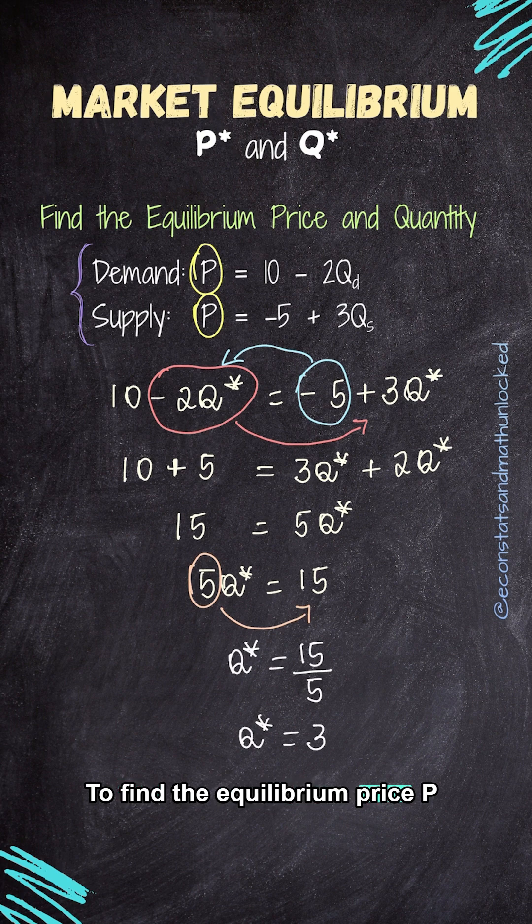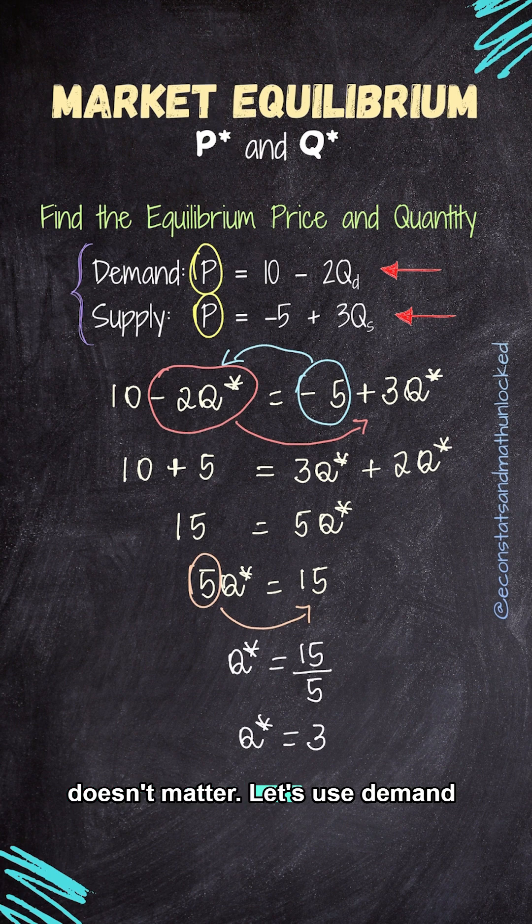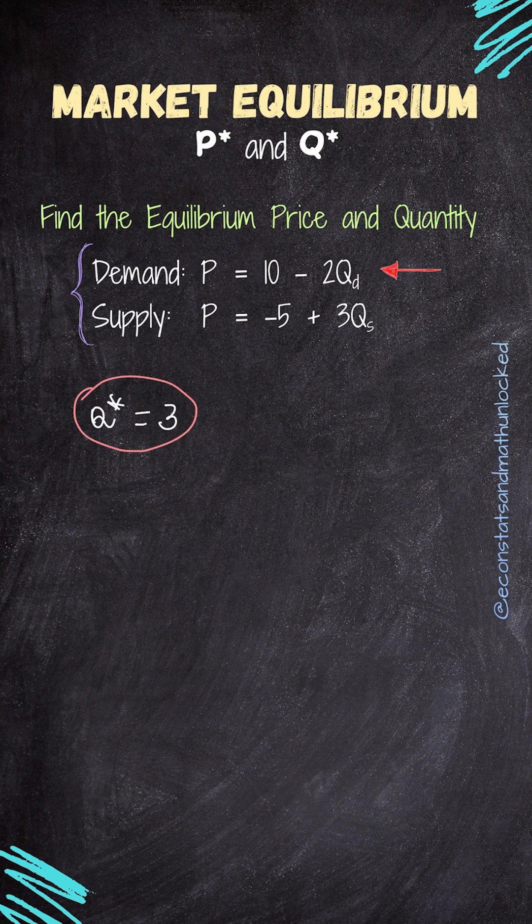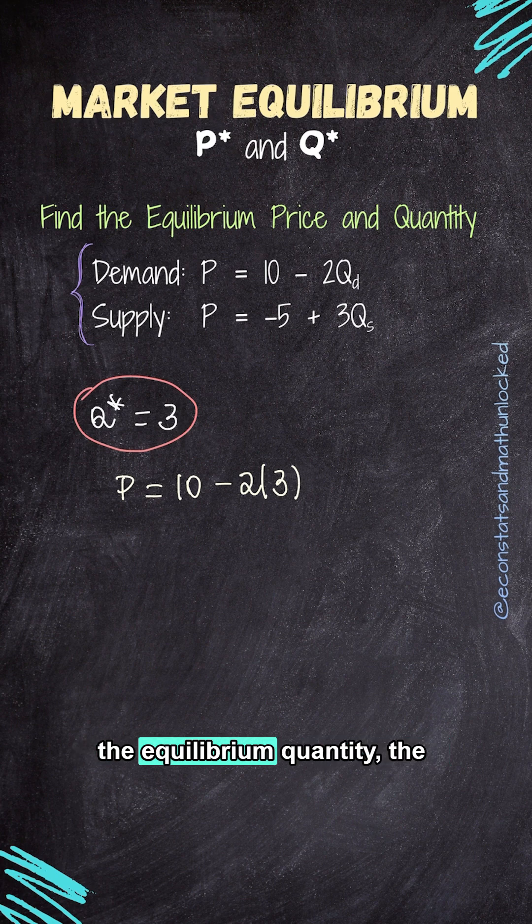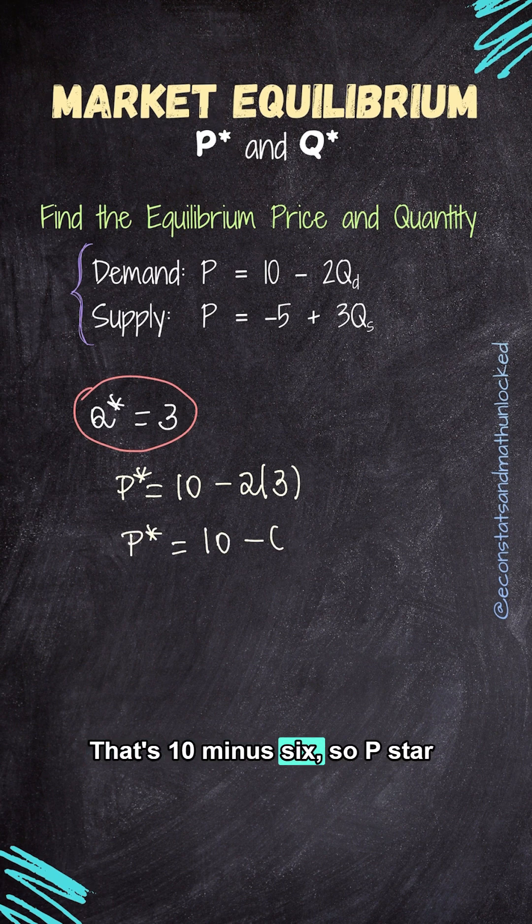To find the equilibrium price, P star, we substitute Q equal to 3 into either function. It doesn't matter. Let's use demand function. P equal to 10 minus 2 times 3. Since we are substituting the equilibrium quantity, the price we obtain is the equilibrium price. That's 10 minus 6. So P star equal to $4.